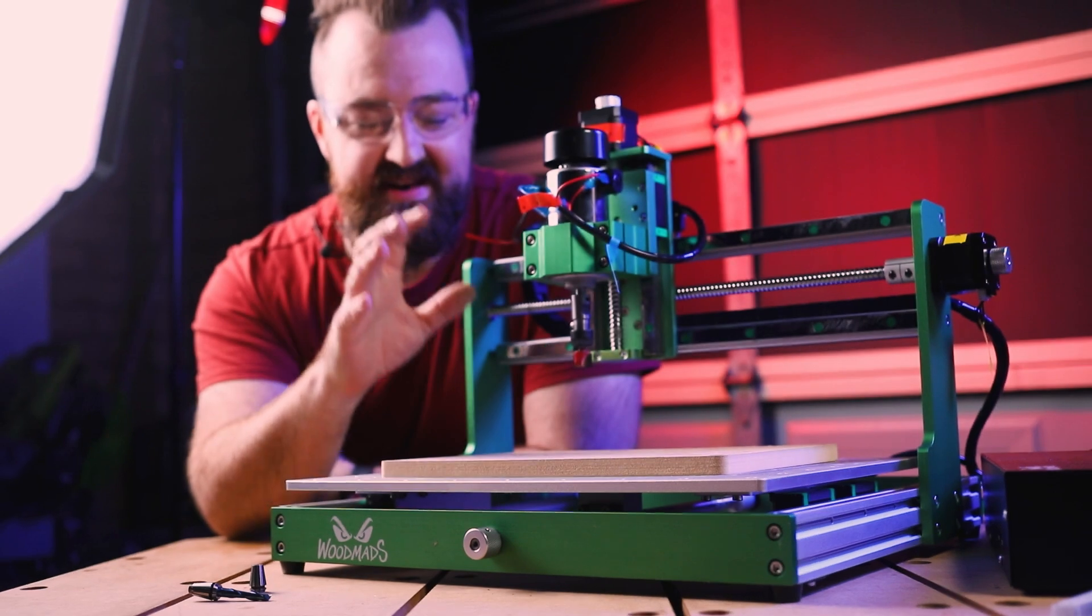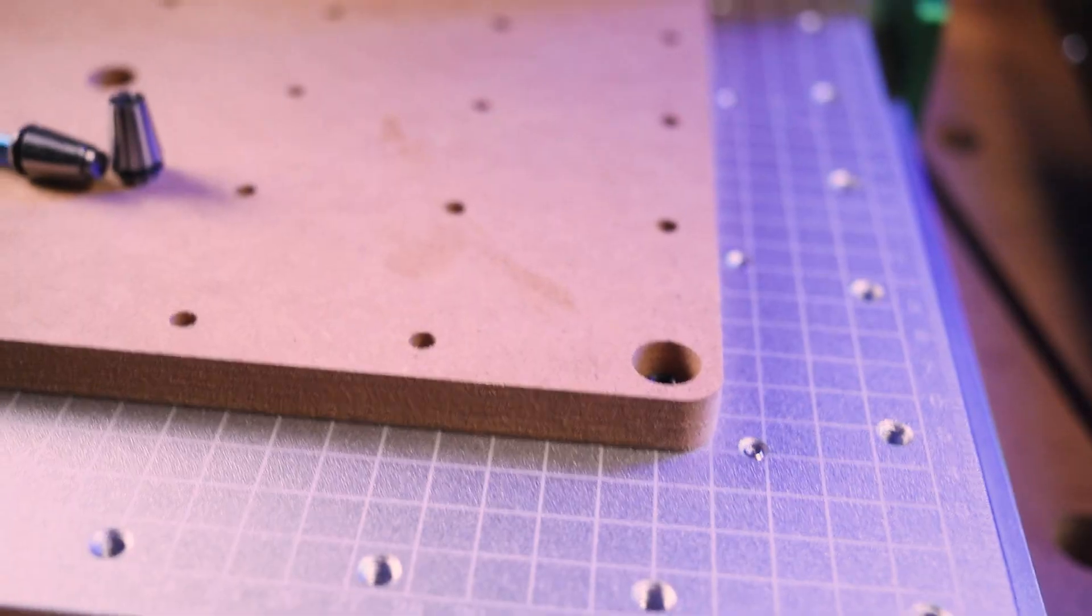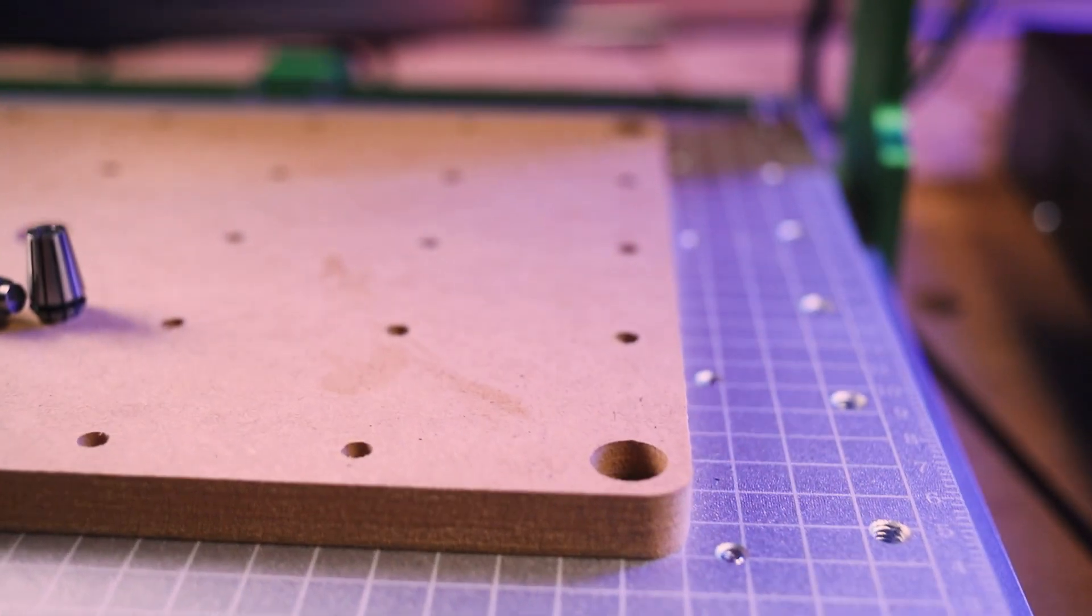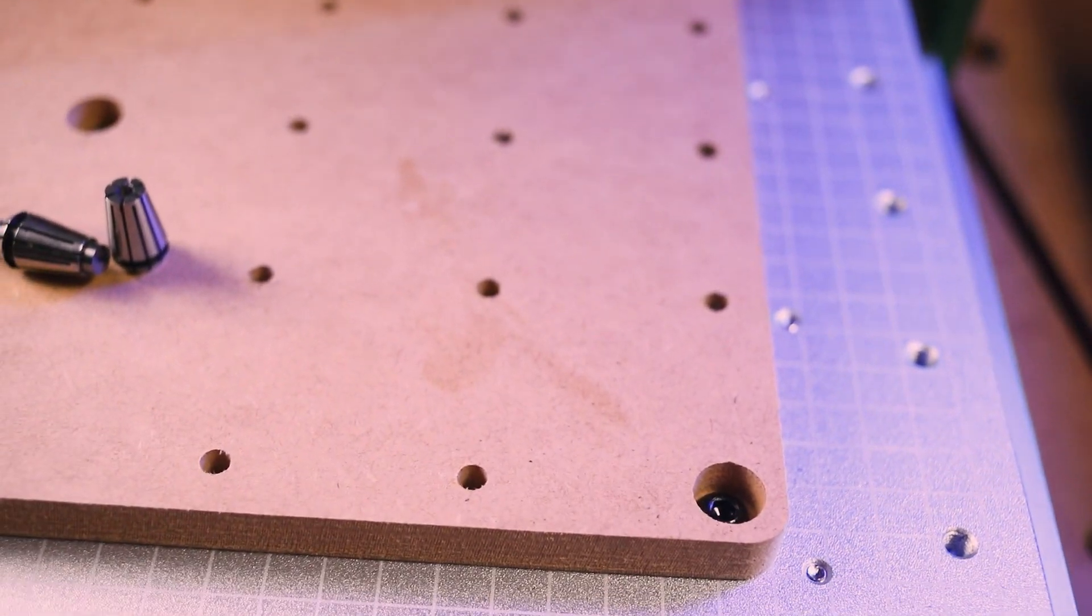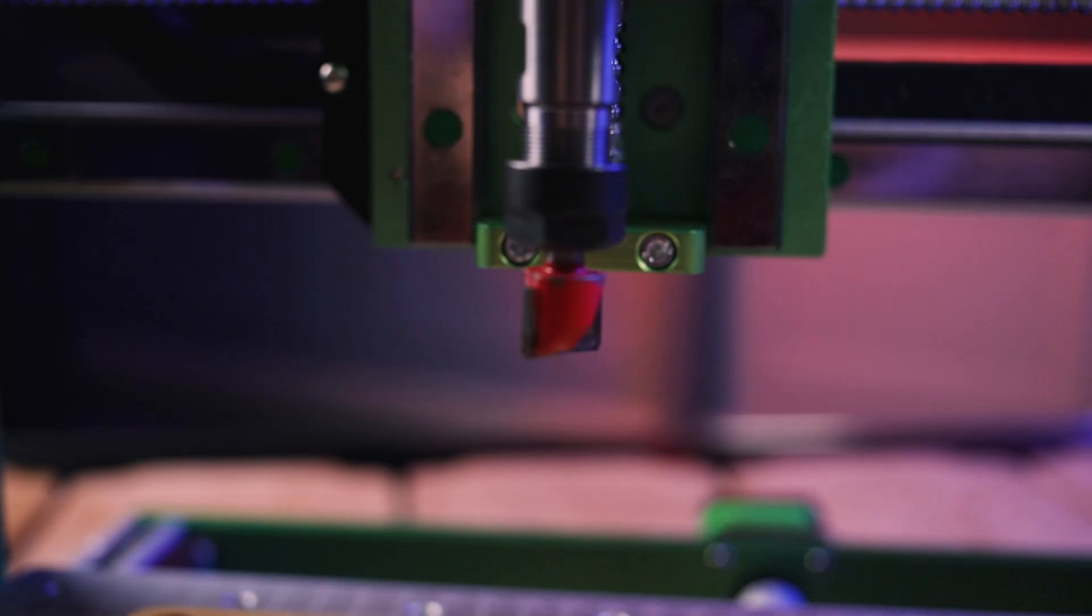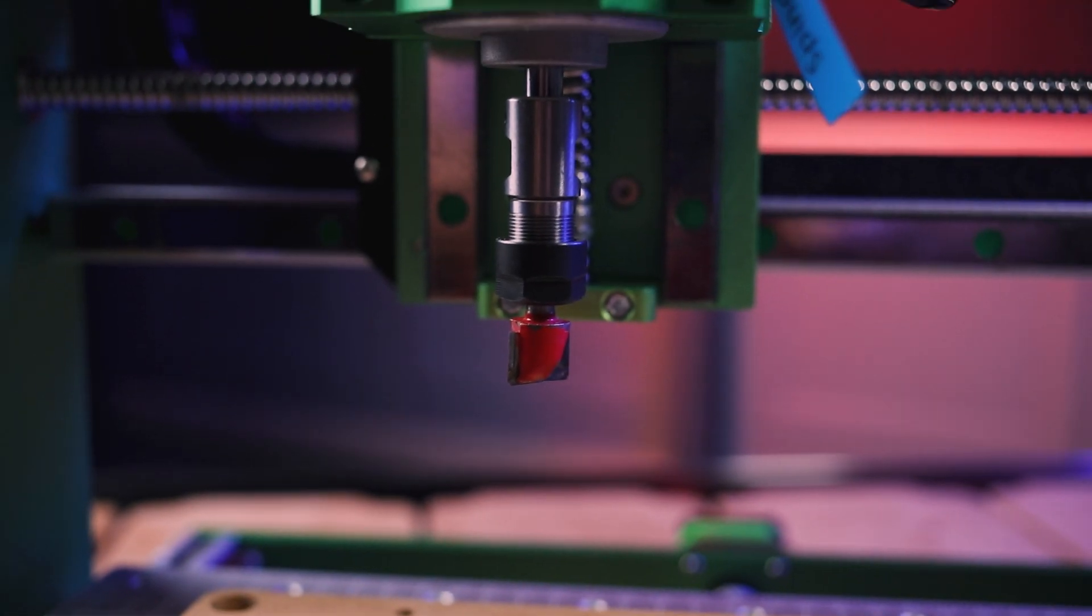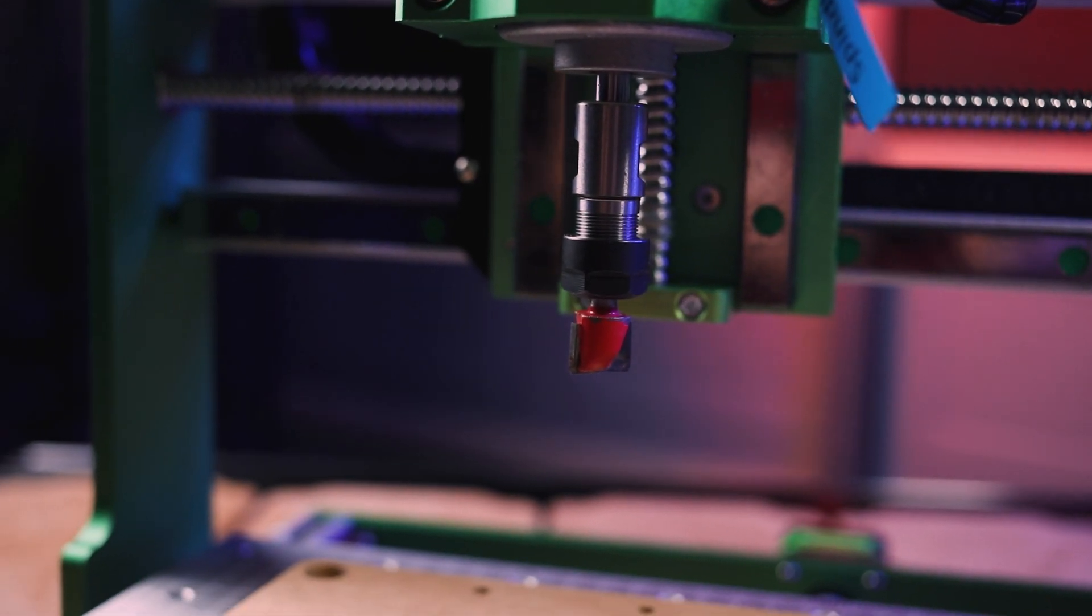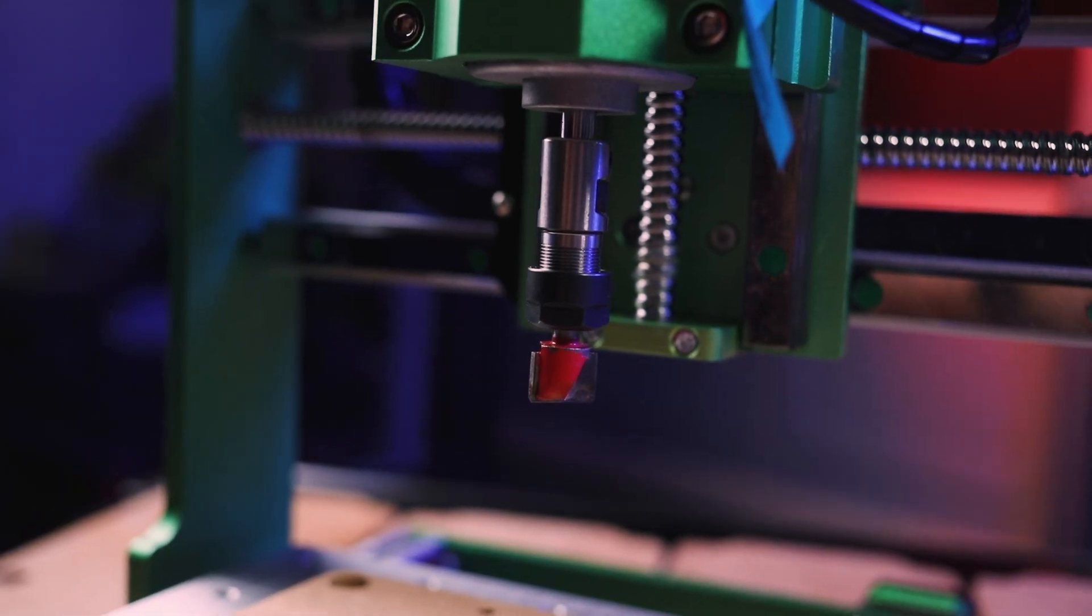So I've gone ahead and installed that spoil board and it is absolutely stuck to that surface. That's not going to go anywhere at all. So I'm really happy about that design. What I've done beforehand, I've gone ahead and inserted this. This is a facing end mill. So it has a flat bottom to it. It's 15 mil wide. So I'll be able to get nice, clean, flat path as it runs over the top of the surface.